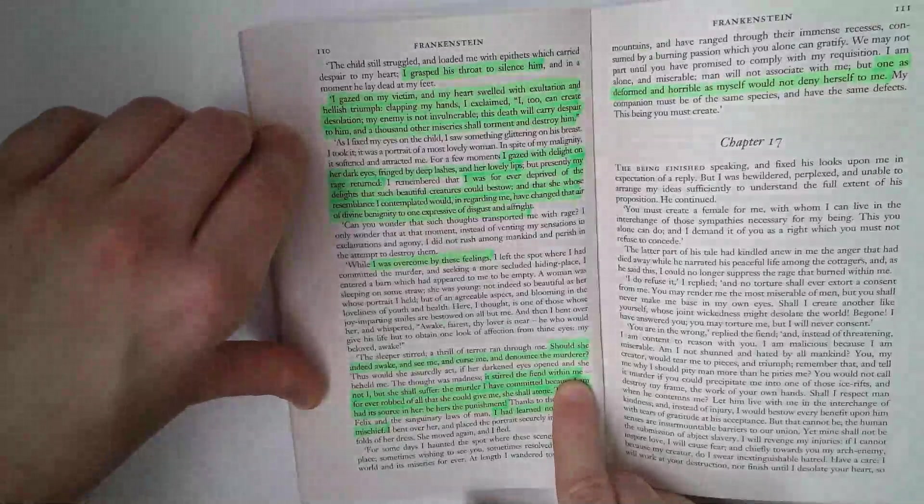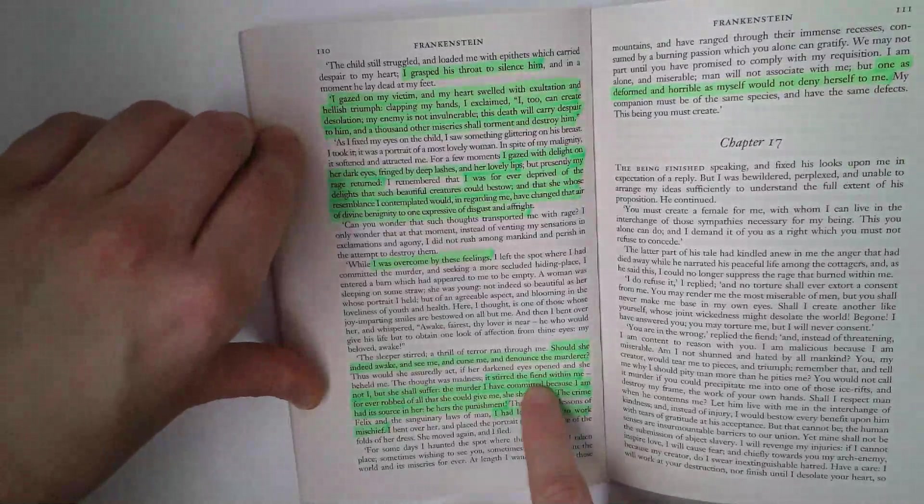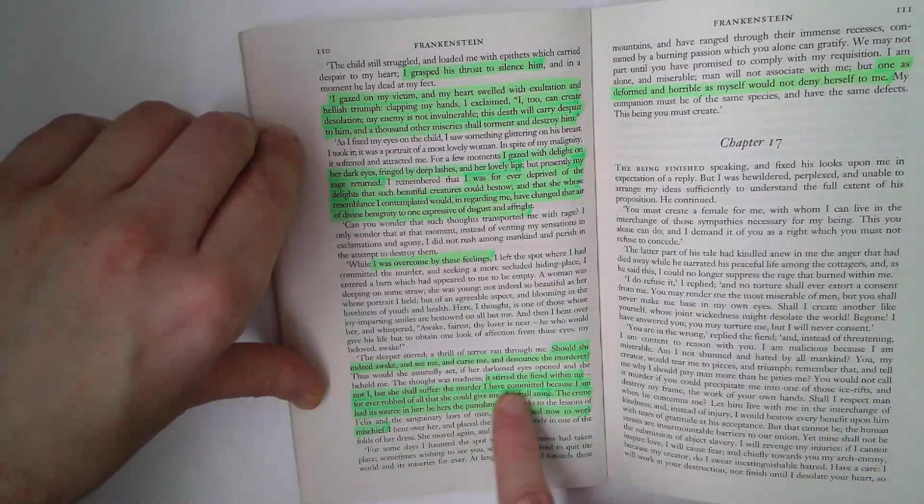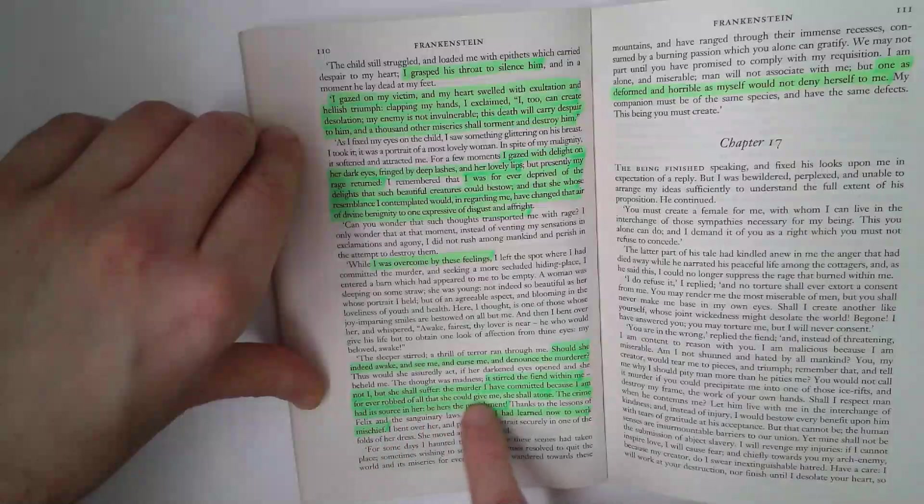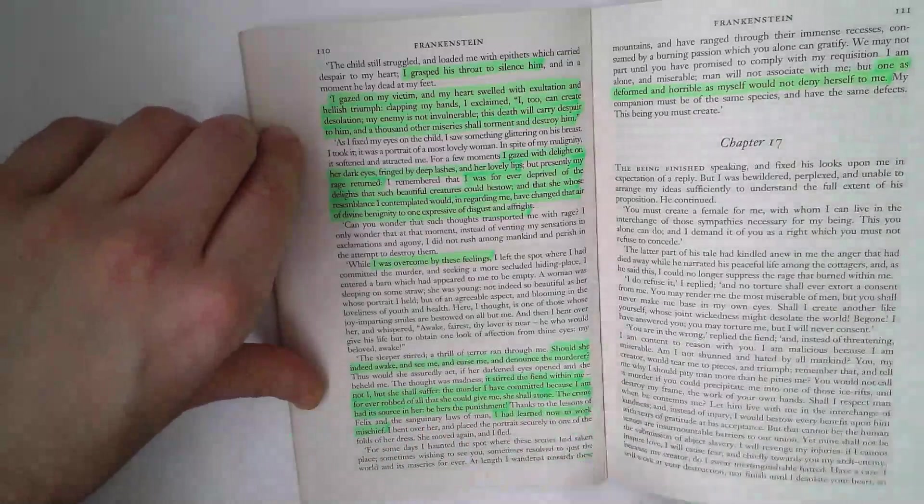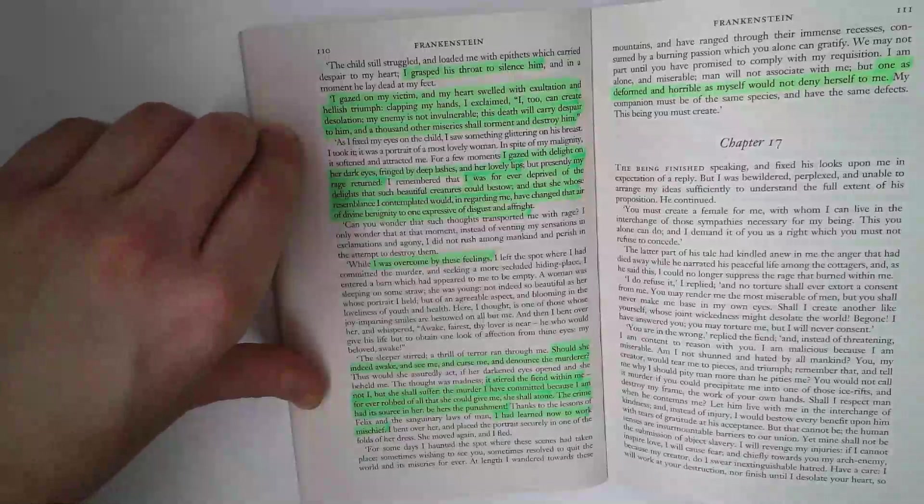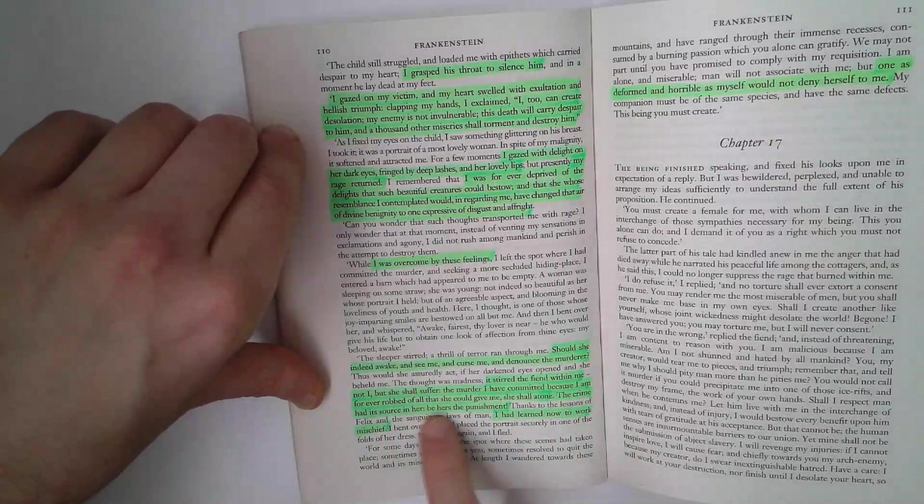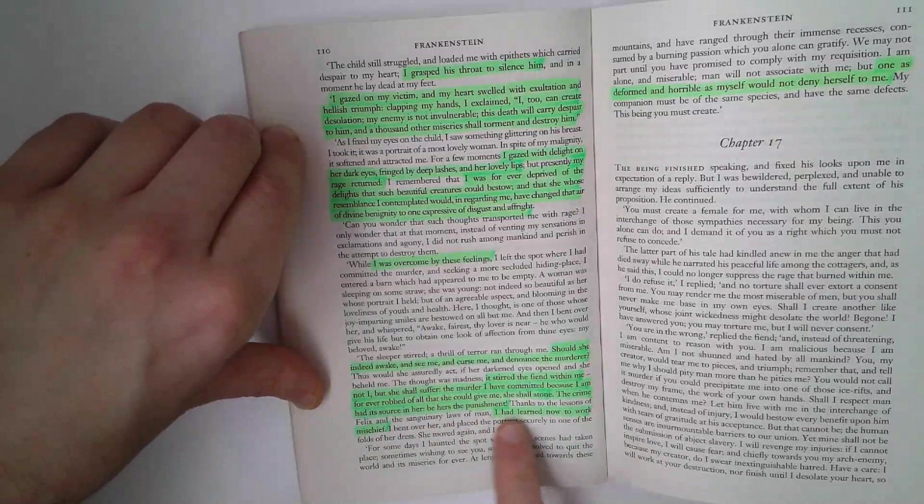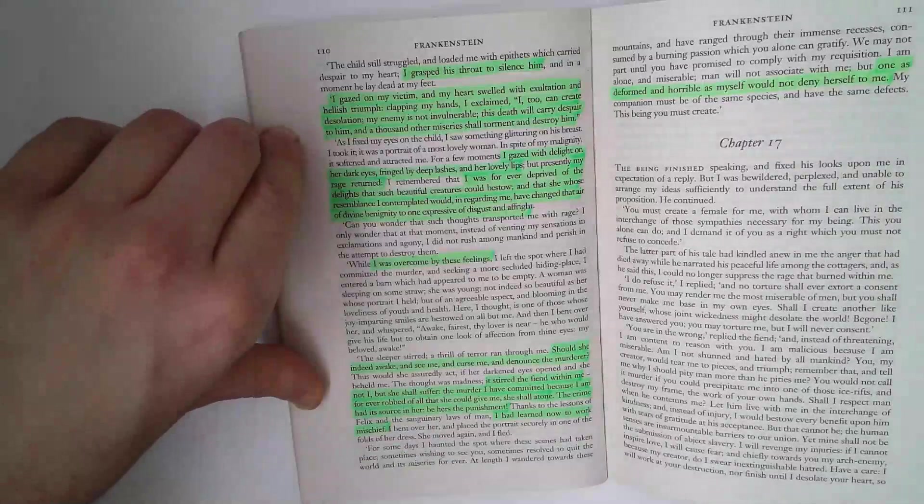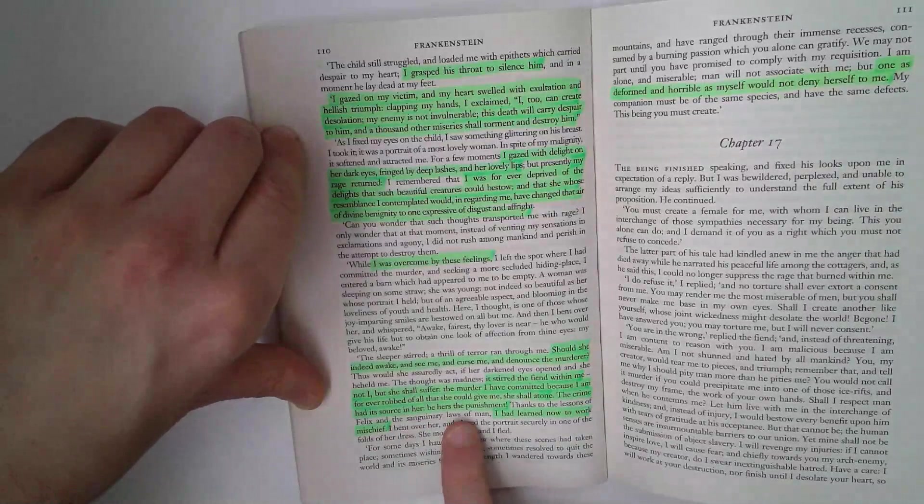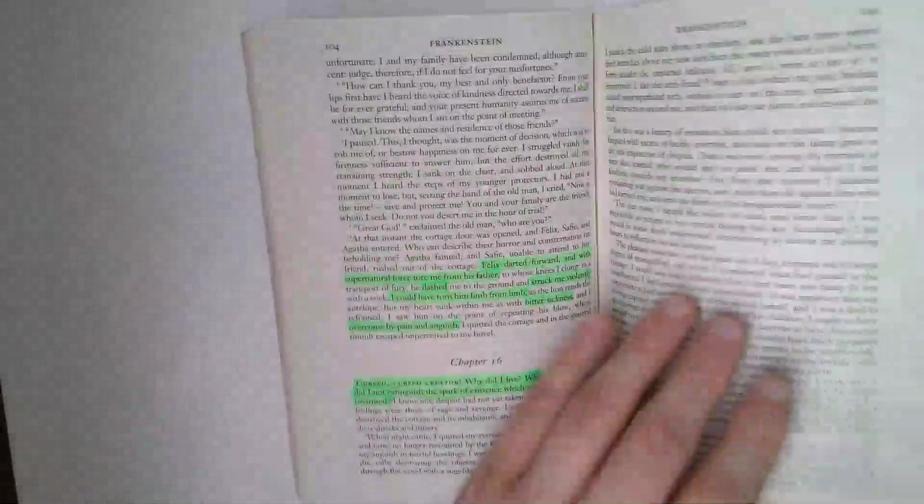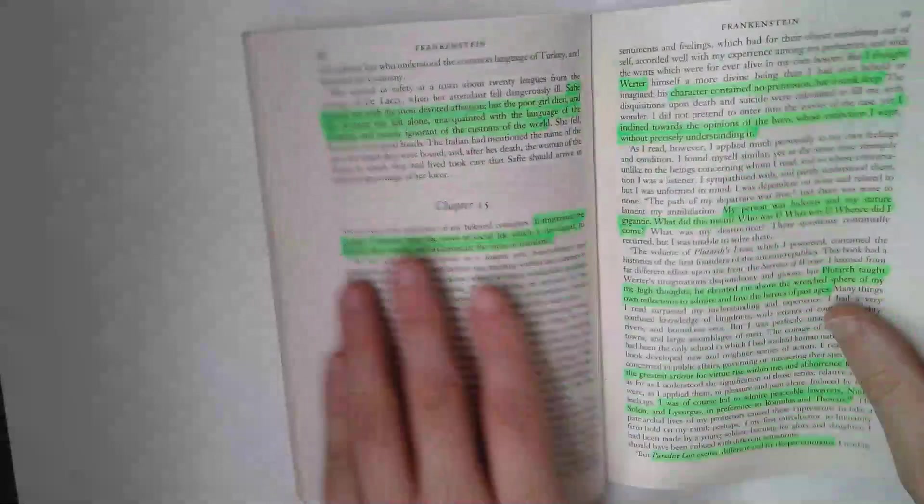And he frames Justine. And it stirred the fiend within me. And this is a simple quotation. This idea that he's always had a fiend, a devil, evil within him. It's part of his nature. Not I, but she shall suffer. The murder I have committed because I am forever robbed of all that she could give me, she shall atone. And he deliberately punishes Justine because they could never be together. The crime had its source in her, be hers the punishments. I've learned now to work mischief. And this idea, he's learned to deliberately break the laws of man.